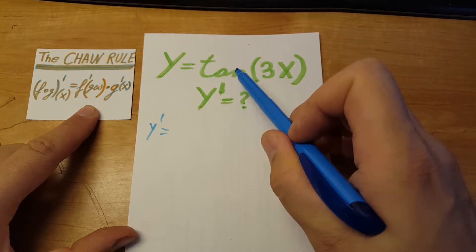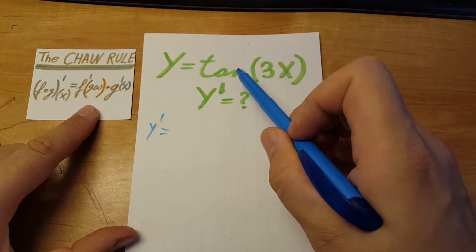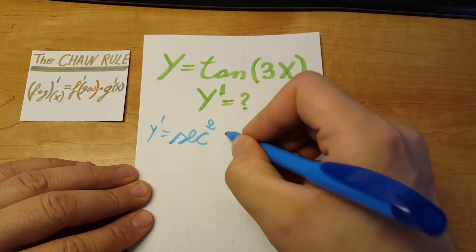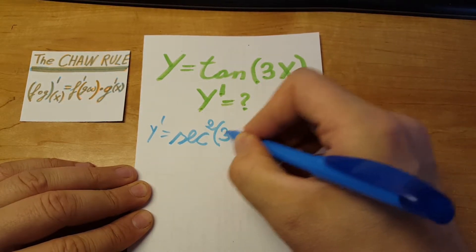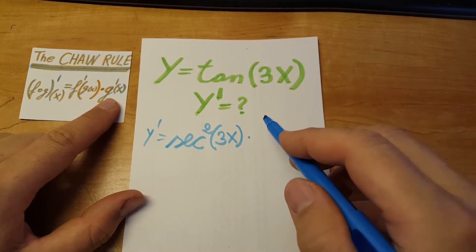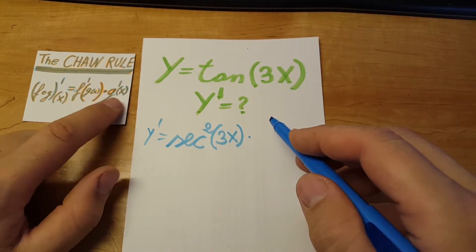The tangent derivative is secant squared, leaving the 3x alone. Times, now we take the derivative of what was the argument just by itself.